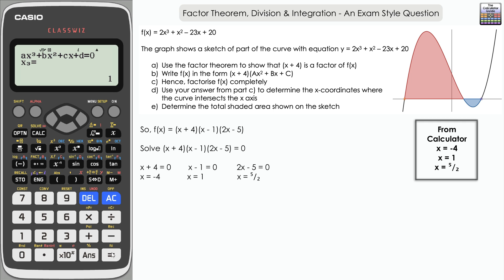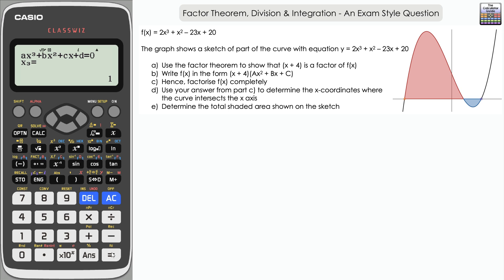Finally, Part E: determine the total shaded area. This will take a bit more time. We'll use the calculator to help. In an exam you may need to show full algebraic substitution, but I'll show the calculator method first so you can verify answers, or use it afterwards to check. If you want to try the algebraic method yourself, pause the video now.